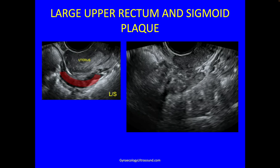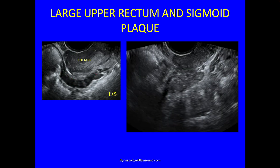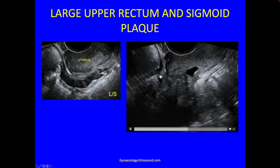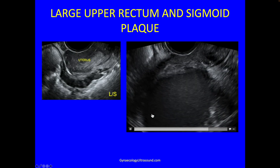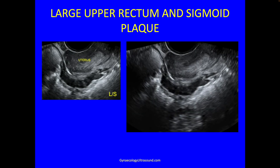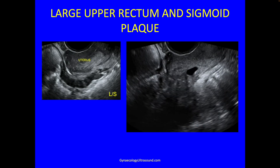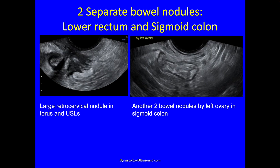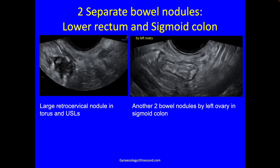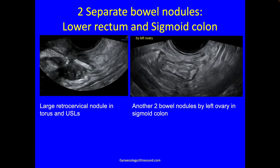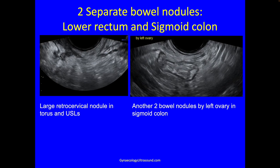This person had a very large upper rectum and sigmoid plaque of endometriosis. You can see it starts below the level of the fundus but goes up and over, and there's a big ovarian endometrioma there as well. Sometimes you have more than one bowel nodule — if you have one, you need to look everywhere else. This one is a very large stenosing retro-cervical nodule in the torus, in the uterosacral ligaments, and in the lower rectum.